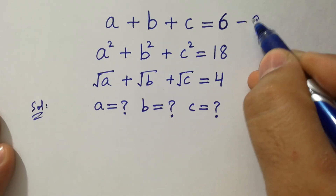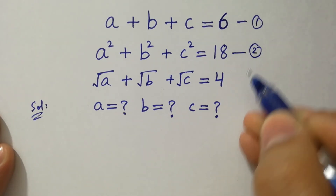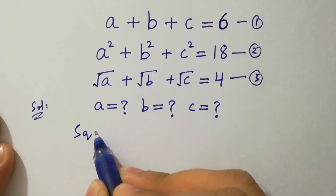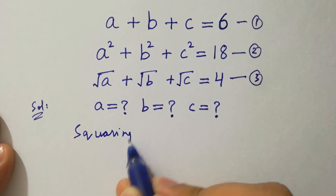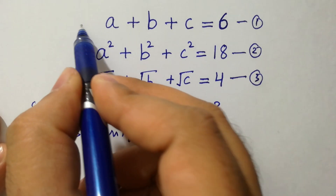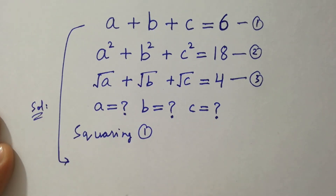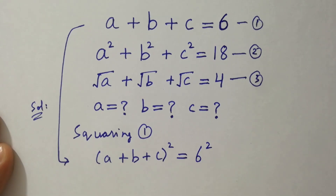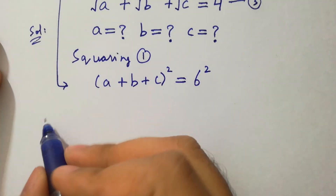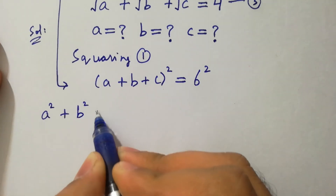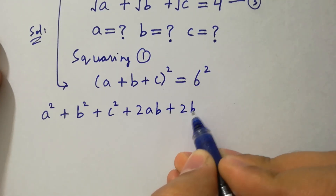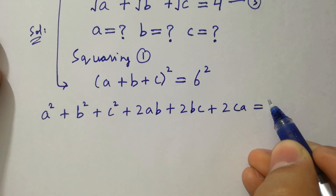Say this is the first equation, this is the second equation, and this is the third equation. Take the square of the first equation on both sides. It will be (a plus b plus c) squared equals 6 squared. The formula gives a squared plus b squared plus c squared plus 2ab plus 2bc plus 2ca equal to 36.